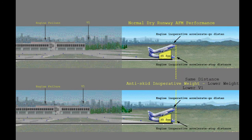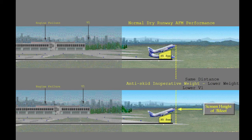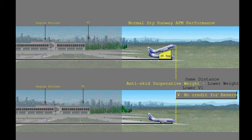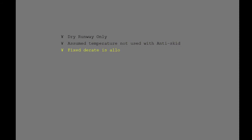The lower anti-skid inoperative limited weight and V1 speed will result in the same takeoff distance as the normal dry runway weight. The anti-skid inoperative performance is based on the normal 35-foot screen height for the continued acceleration following an engine failure, and does not take credit for reverse thrust. Anti-skid inoperative performance is allowed on a dry runway only. The use of assumed temperature is not allowed when anti-skid is inoperative. The use of D-rate is allowed with an anti-skid inoperative, and in fact D-rate could result in an increase in allowable takeoff weight if the airplane is limited by V1 MCG.